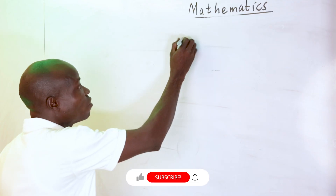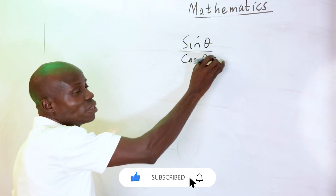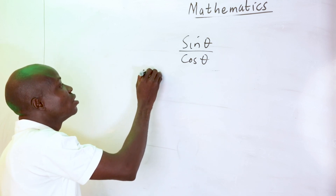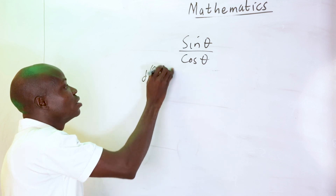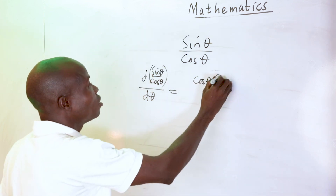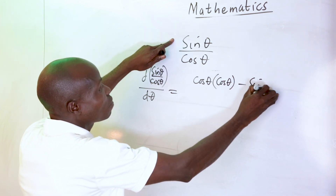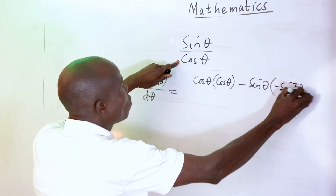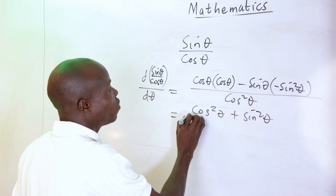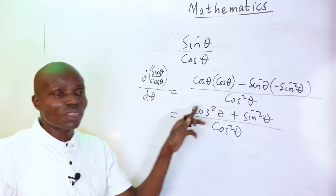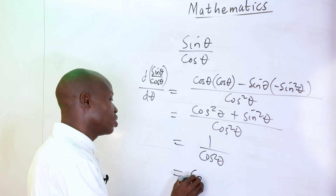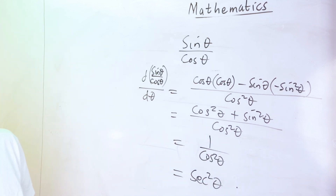Question 91: find the derivative of sin theta over cos theta with respect to theta. Using the quotient rule: [cos theta times cos theta minus sin theta times (minus sin theta)] over cos²theta, giving (cos²theta plus sin²theta) over cos²theta. Since cos²theta plus sin²theta equals 1, the result is 1 over cos²theta, which equals sec²theta. The answer is option A.